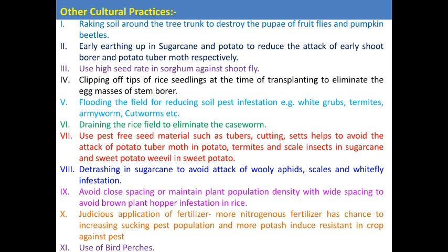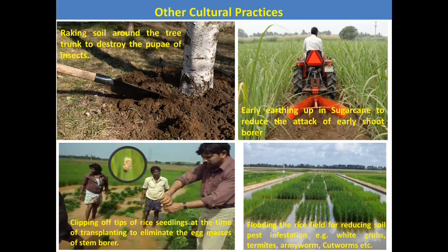Raking the soil around the tree trunk: for pear, the fruit fly pupates in soil around the tree trunk; for mango, the mango fruit fly also pupates in soil near the trunk. Raking the soil around the tree trunk helps destroy the pupae of the fruit fly. This is a simple technique.